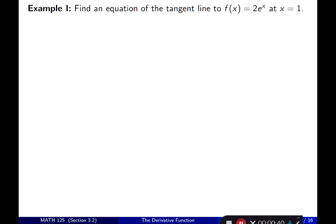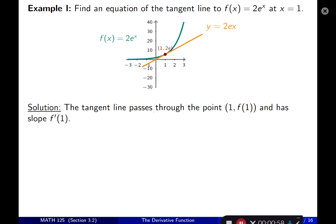For the equation of the tangent line I need two things: the slope of the tangent line, which is the derivative evaluated at x = 1, and a y-value at x = 1. The y-value is found by plugging x = 1 into the original function, giving f(1) = 2e¹, so the point is (1, 2e).